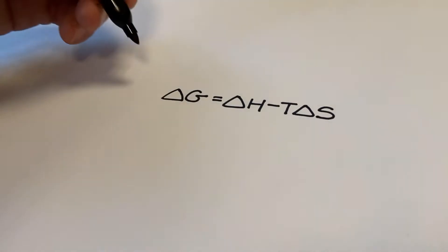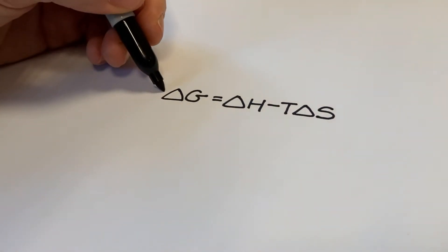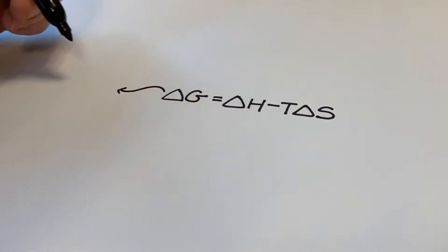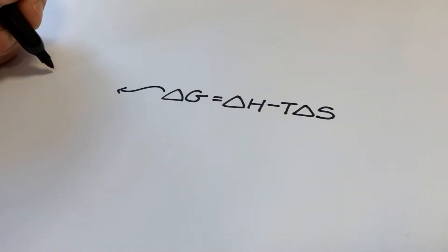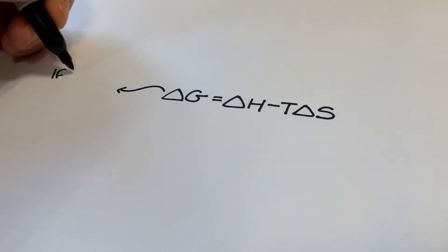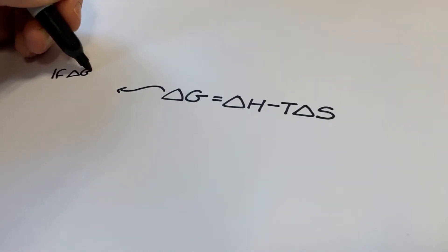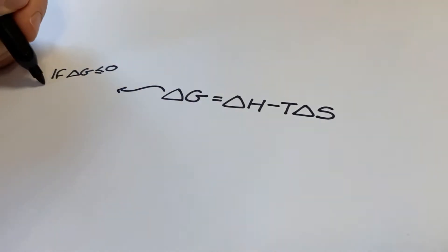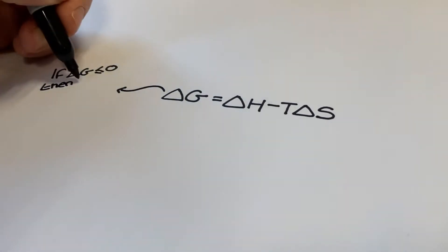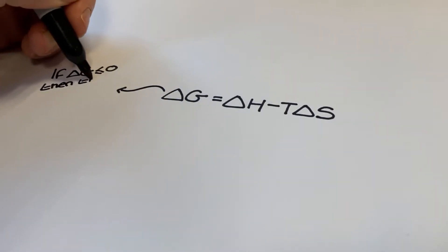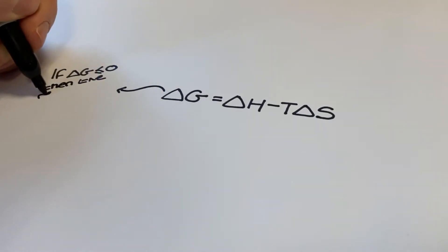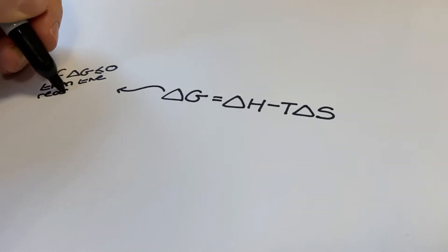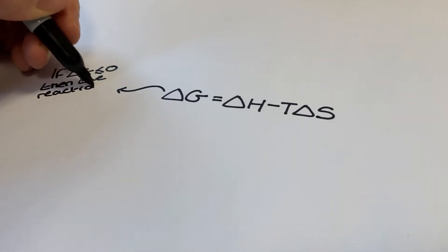If you need a quick recap of the terms we are going to cover in this equation in more detail, then I recommend watching my other video in this series, which you can find by clicking the link on screen now via the little i at the top of the screen. Otherwise I will assume that you are familiar with the understanding that a delta G value of less than or equal to zero deems a reaction feasible.